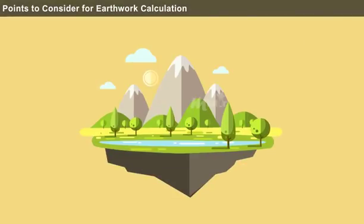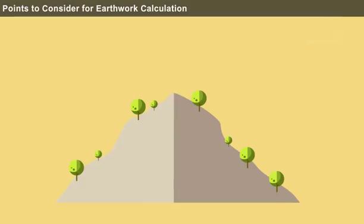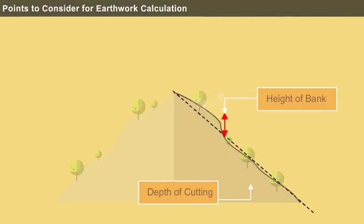In a hilly country, roads are in both the banking and cutting. The excavated earth from the cutting is used for banking purposes within the economic limits. Using the longitudinal section and formation line, the height of the bank and depth of the cutting is calculated. This difference in the road level of the ground and formation line gives the height and depth of the excavation.